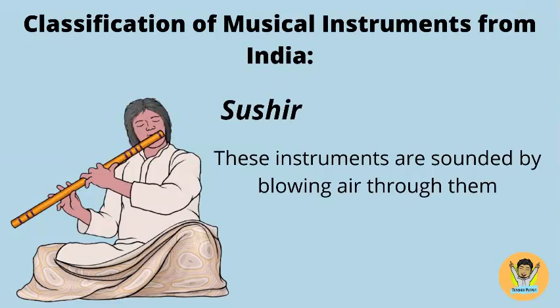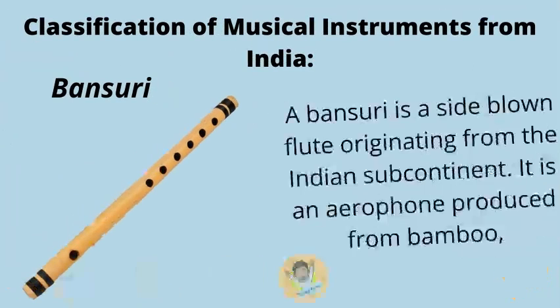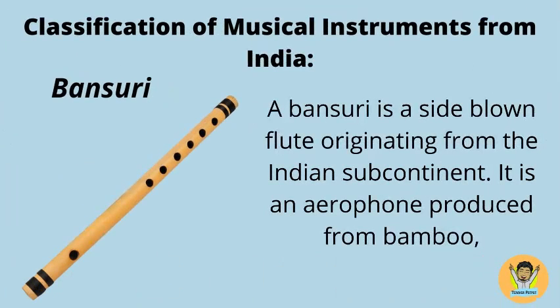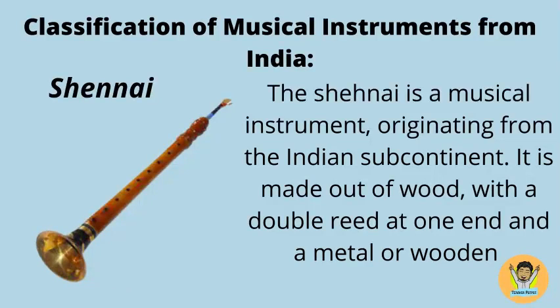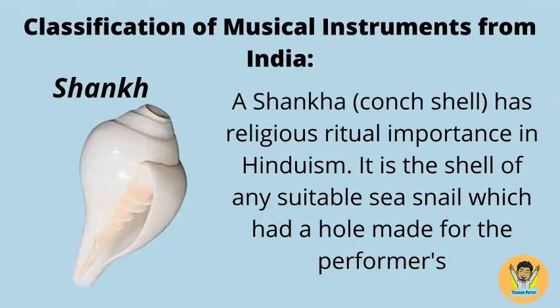Susher instruments are sounded by blowing air through them. The Bansuri is a side-blown flute originating from the Indian subcontinent; it is an aerophone produced from bamboo. The Shennai is a musical instrument originating from the Indian subcontinent, made out of wood with a double reed at one end and a metal or wooden bell. The Shankha, or conch shell, has religious and ritual importance in Hinduism. It is the shell of a suitable sea snail with a hole made for the performer.